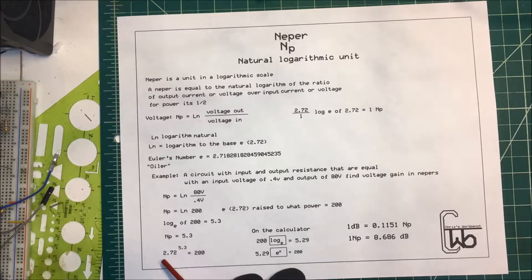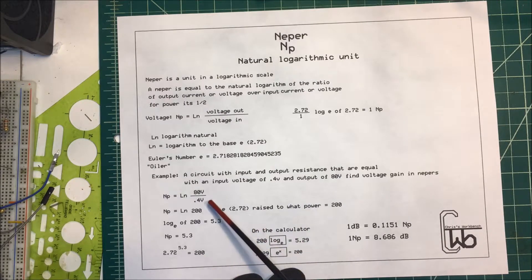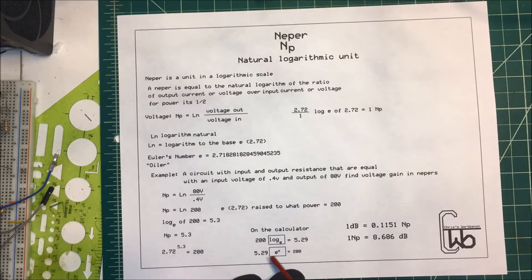So if we take our Euler's number e, which is 2.72, and raise it to the power of 5.3, that equals 200. On the calculator, we enter 200 first, then log e, and that comes out to 5.29. If we want to go the other way, we take 5.29 and apply e to the x, and that equals 200.